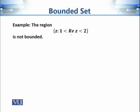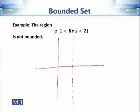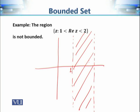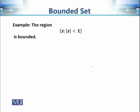Consider all complex numbers where the real part lies strictly between 1 and 2 — a vertical strip. The boundaries at Re(z) = 1 and Re(z) = 2 are not included (dotted lines). This region cannot be enclosed inside any closed disk, so it is not bounded. An open disk, on the other hand, is a bounded set.